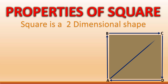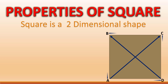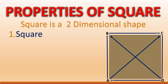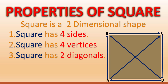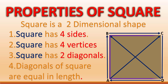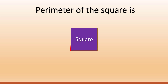AC and BD are the diagonals. AB, BC, CD, and AD are the four sides. The square has four vertices: A, B, C, D. The square has two diagonals: AC and BD. The diagonals of the square are equal in length. The blue line shows the perimeter of the square.